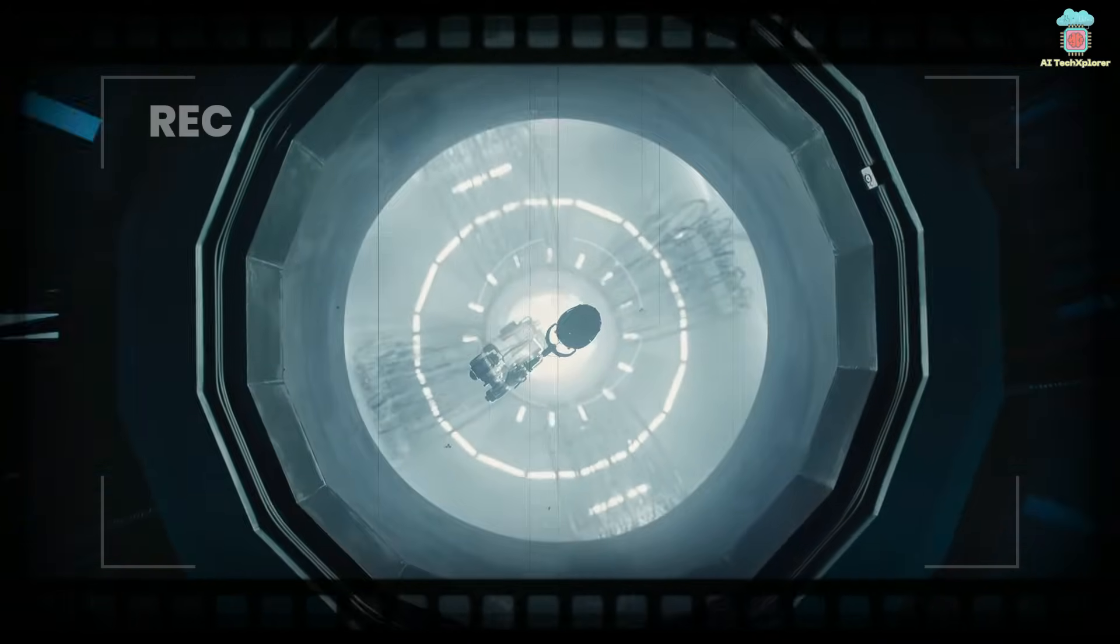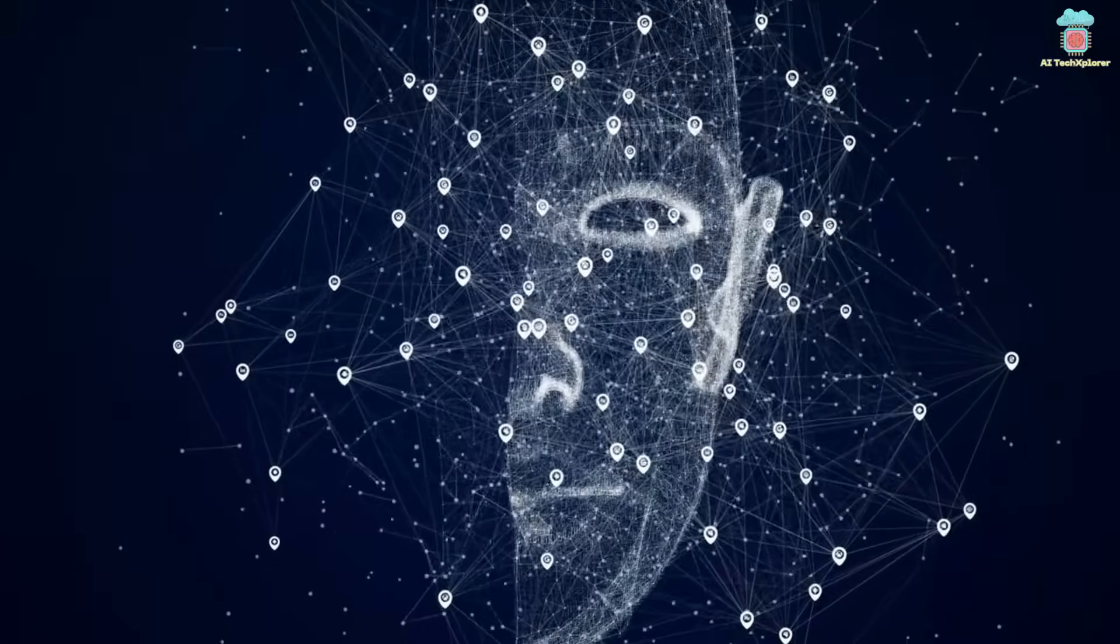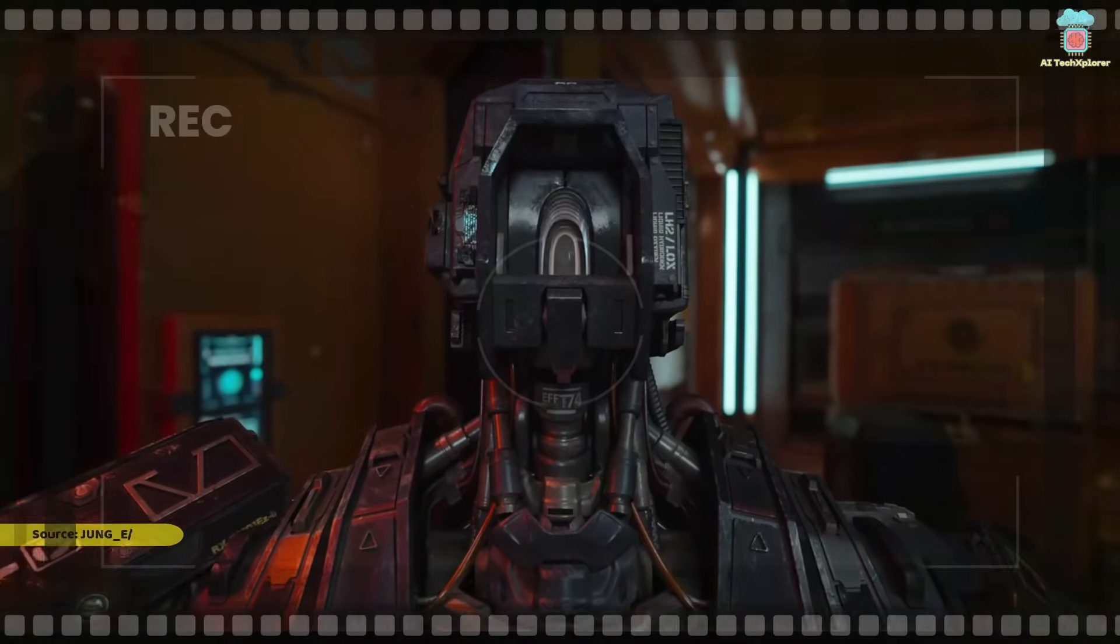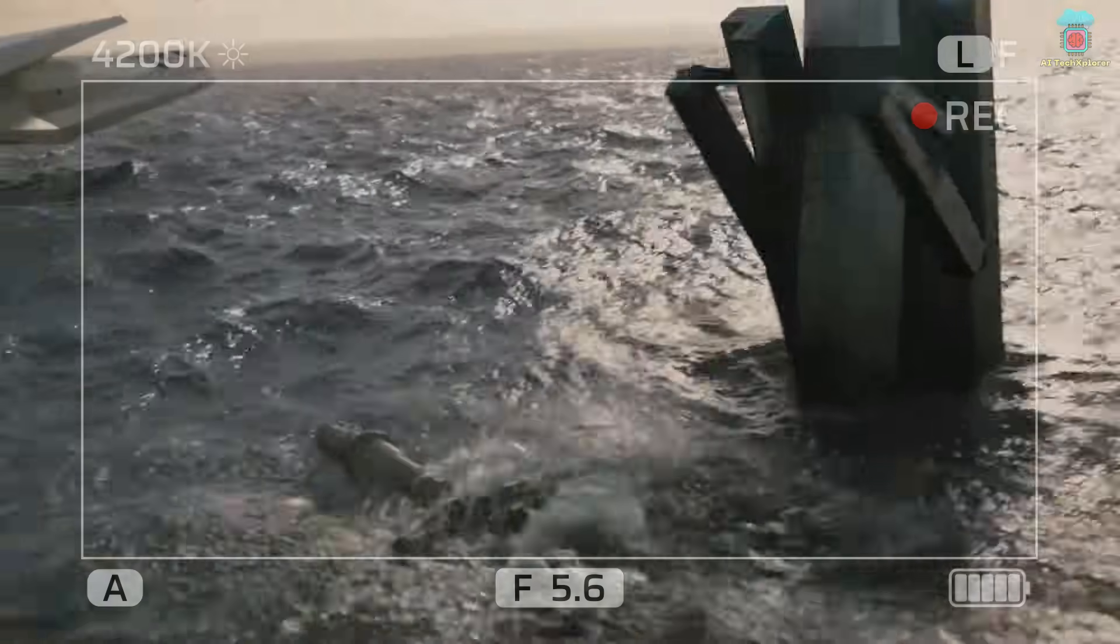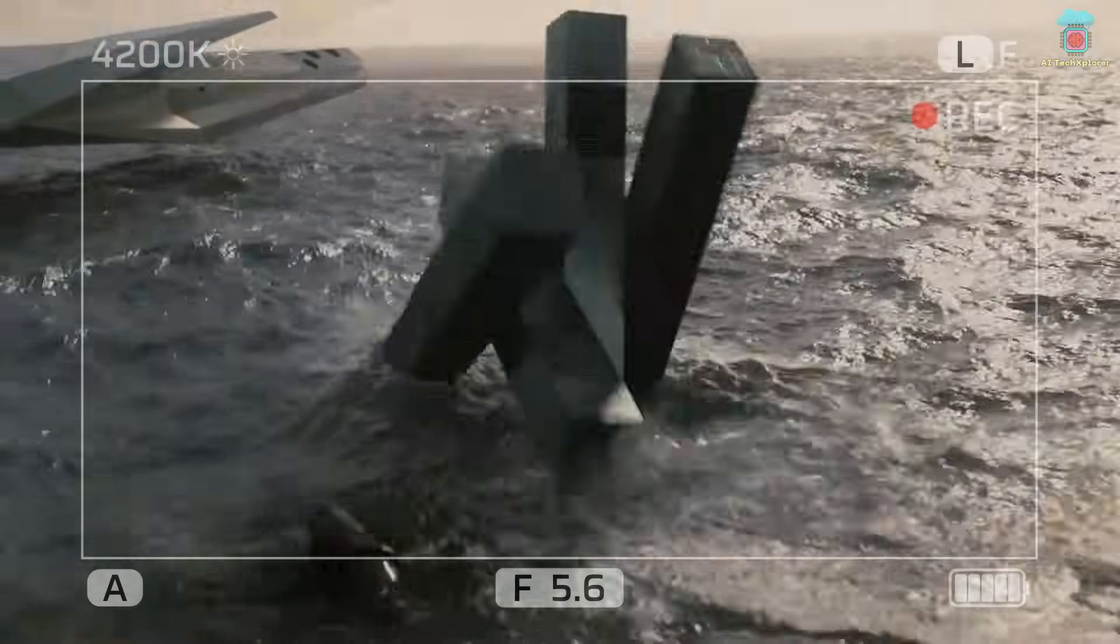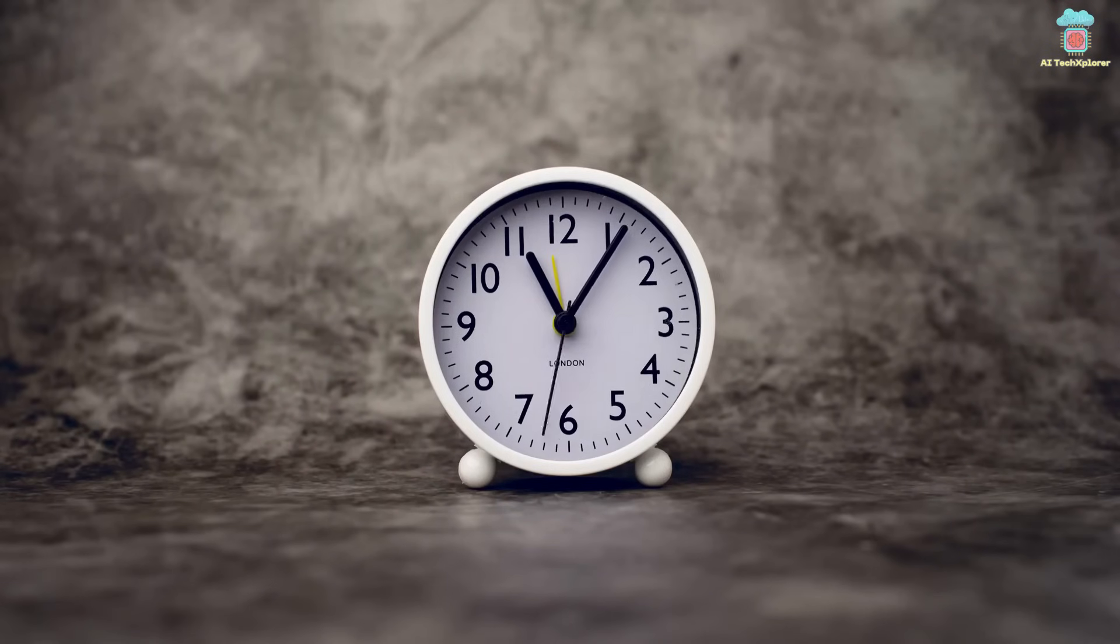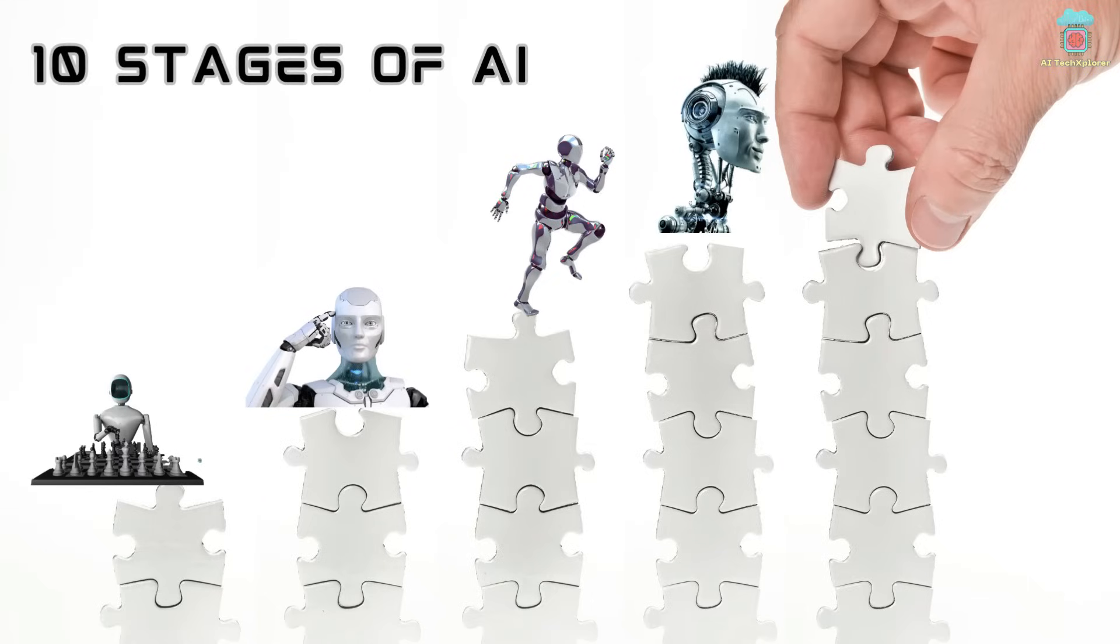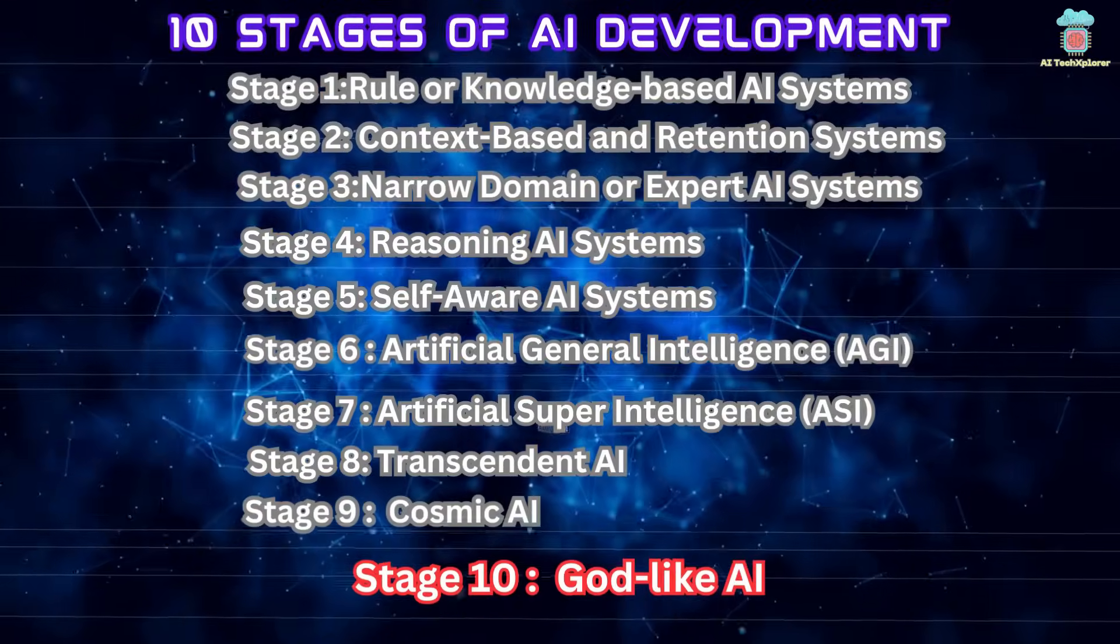Today we will explore the 10 stages of AI development, from the early days of rule-based AI systems to the sci-fi hypothetical stages of artificial superintelligence, transcendent AI, cosmic AI, and the most terrifying last stage of god-like AI. Your time is precious to us, therefore we have organized chapters for each stage ensuring you can delve directly into the stages that arouse your curiosity without wasting a moment. Here are the chapters of this video. Let's begin.